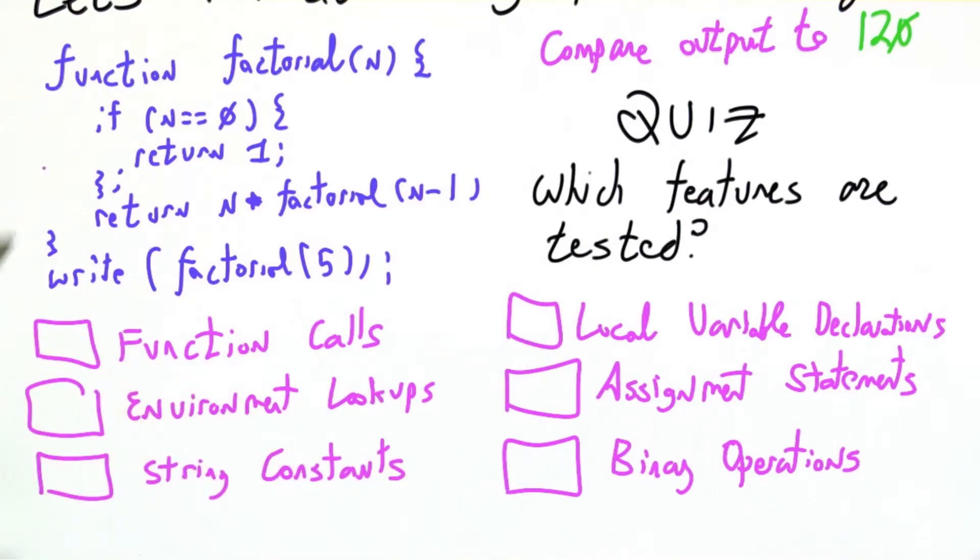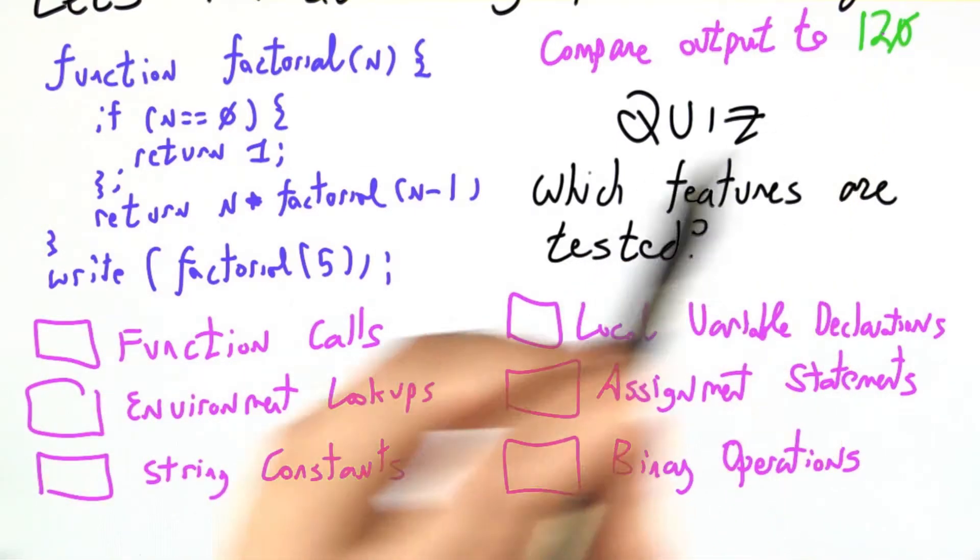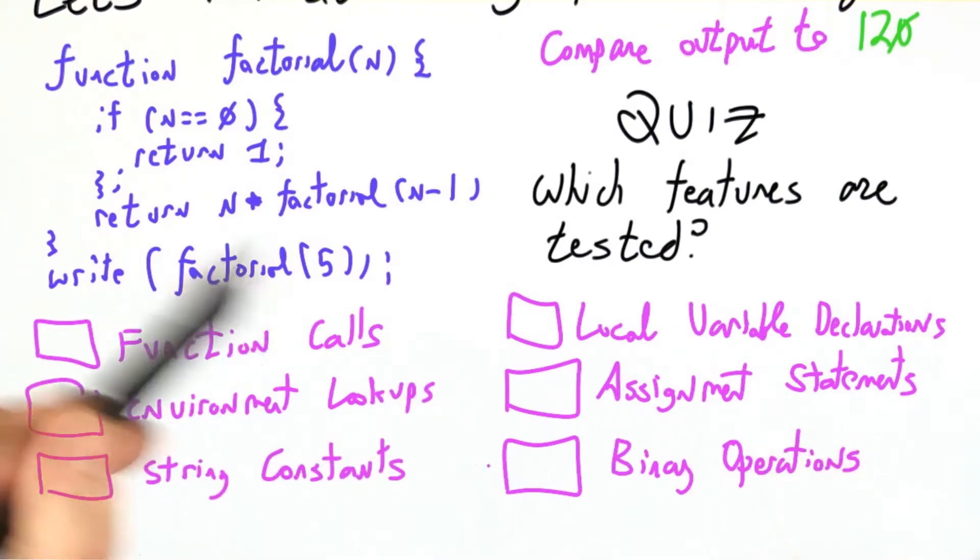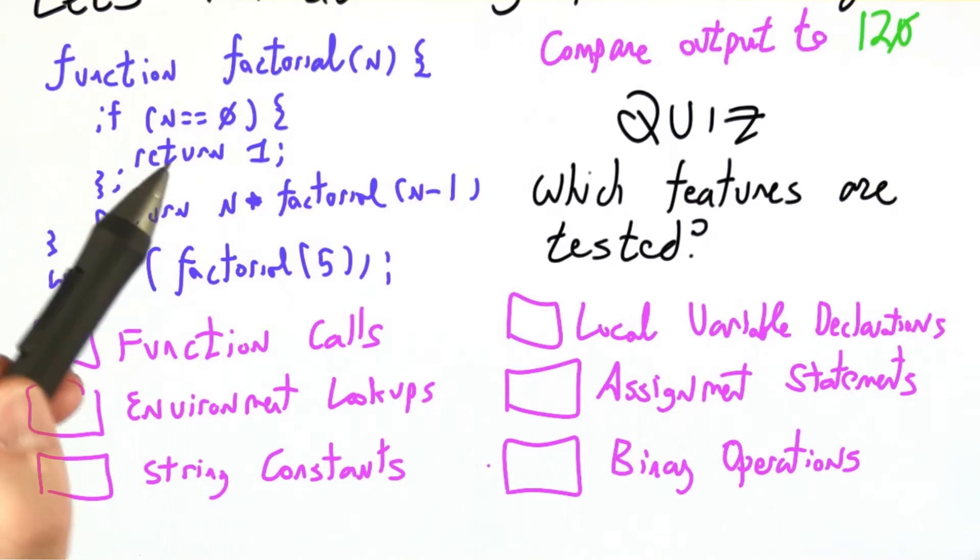And what I want to know is, if this is our test input and we're comparing the answer to 120, which of these features in our interpreter will be tested? If something isn't tested, we can't hope to find a bug in it.